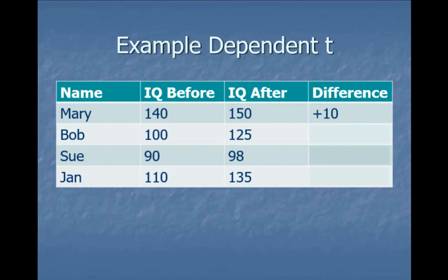I can see that Mary went up 10 points, Bob went up 25, Sue went up 8, and Jan went up 25. This is very interesting because now I can see what the difference is. If I were trying to market vitamin K, I wouldn't say Mary went from 140 to 150 and Bob went from 100 to 125.